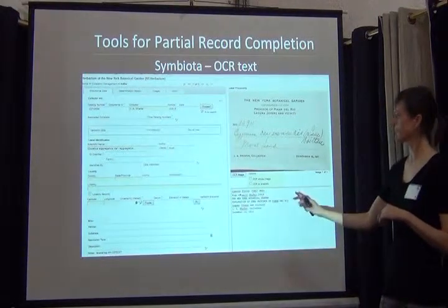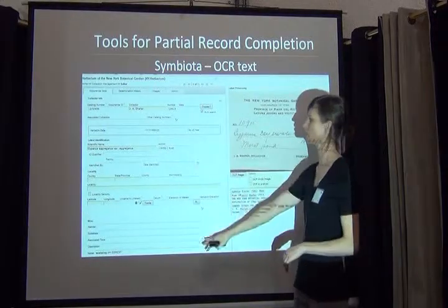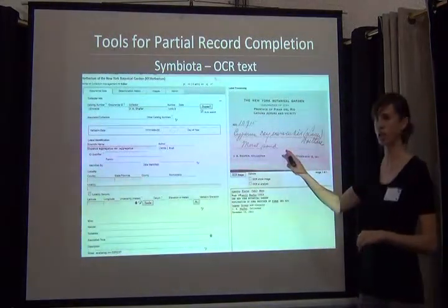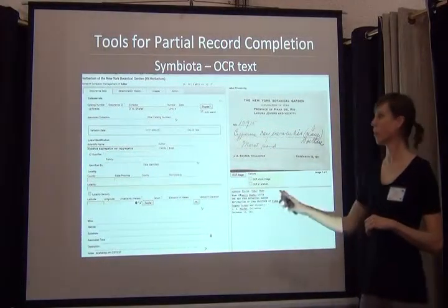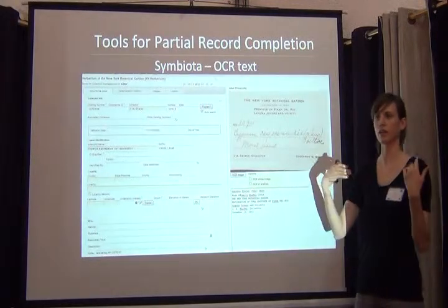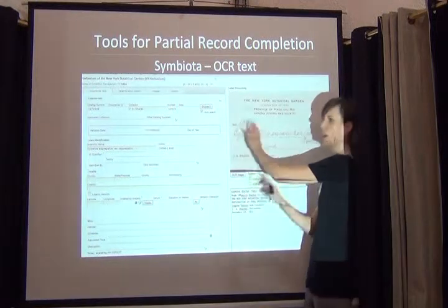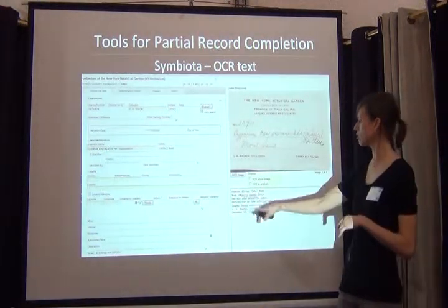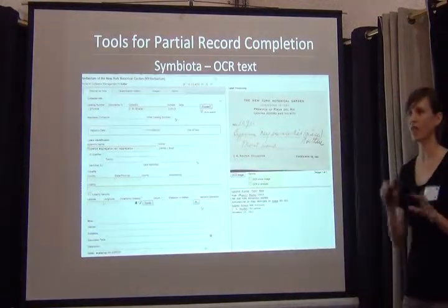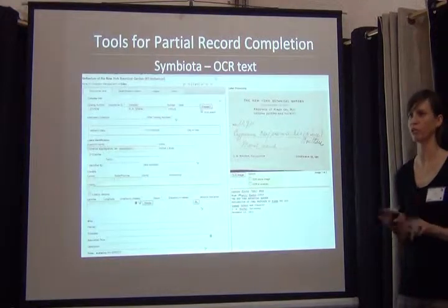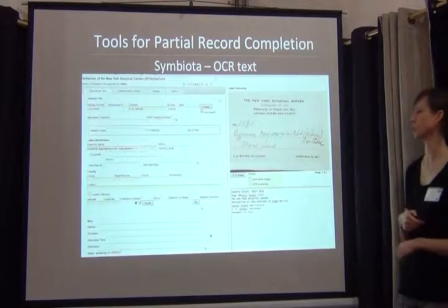This is the Symbiota portal Kim mentioned yesterday. The great thing about this is you get one screen where you have all of your fields listed on one side, you have an image of the original label, and underneath it you have all the OCR text. Symbiota is in the process of integrating with Salix and integrating natural language processing so it can start doing the parsing in this screen for you. But if the OCR text is good, you can just cut and paste into the data fields, which saves users from all the transcription that you usually have to do, which can be much more time consuming.